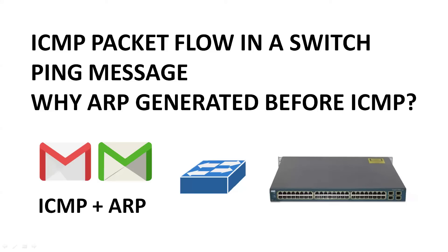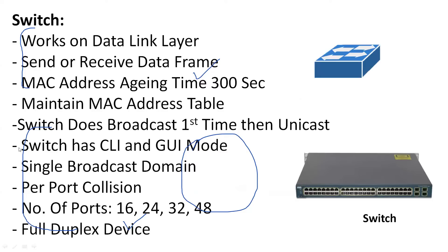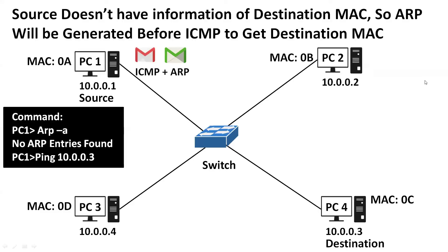Hello everyone, welcome to my YouTube channel. Today we have a very important topic: ICMP packet flow in a switch, what is a ping message, and why the ARP message is generated before ICMP packet forwarding in a switch. First, you need to know what a switch is. A switch is a Layer 2 device that forwards frames, has MAC address aging time, and does broadcast for the first time, then unicast.